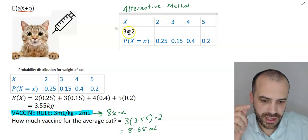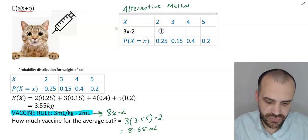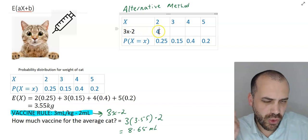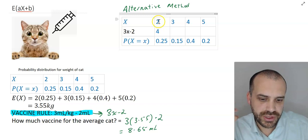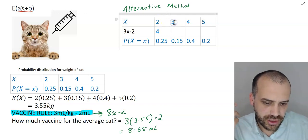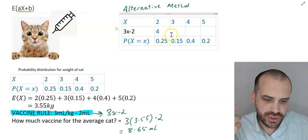This 4 represents the amount of vaccine that a 2 kilogram cat would receive. Now this 3 kilogram cat would receive 3 times 3 minus 2, which is 7.